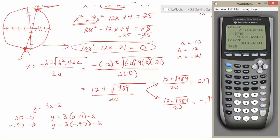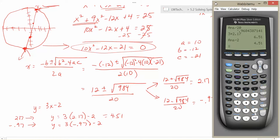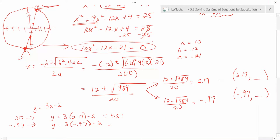And pull up our calculator again. 3 times 2.17 is 6.51. Subtract 2 from that, and I get 4.51. And then when I do the negative 0.97, 3 times negative 0.97, and then subtract 2 from that, and I get negative 4.91.